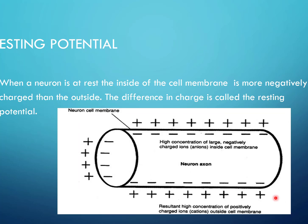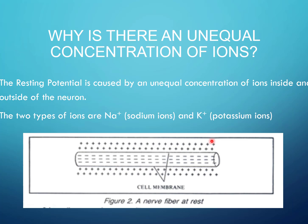How is an action potential caused? We need to talk about resting potential first. When a neuron is at rest, the inside of the cell membrane is more negatively charged than the outside. The difference in this charge is called the resting potential — usually a cell has a positive charge on the outside and a negative charge on the inside.